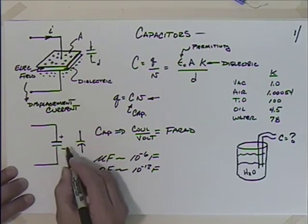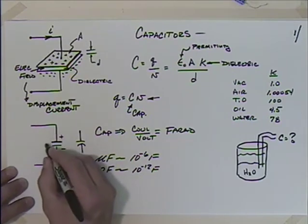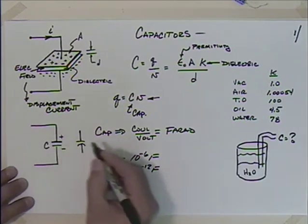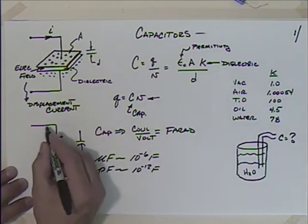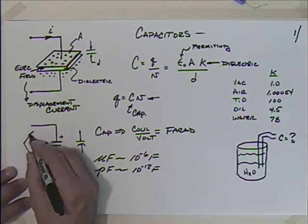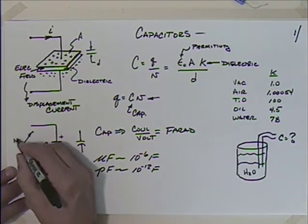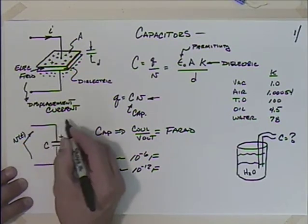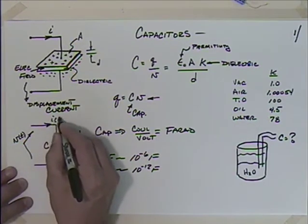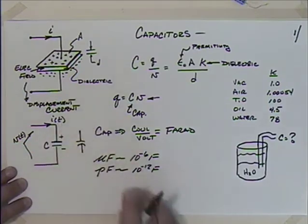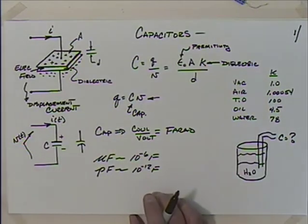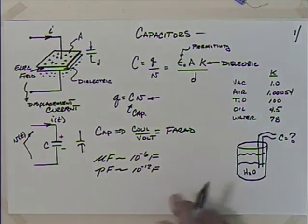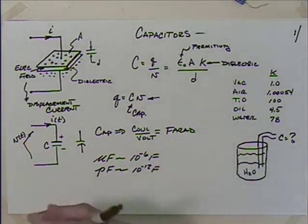The capacitor symbol usually shows plus and minus, the value of the capacitor, a voltage across it as a function of time v(t), and a current i(t), because those are probably going to be changing with respect to time. Let me show you some physical examples.